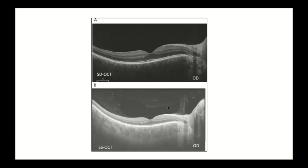Not only can swept source OCT capture the image in front of the retina, but it also provides information behind the RPE cells — you can see a faint line representing the choroid. In Malaysia, Japan, and parts of Southeast Asia, polypoidal choroidal vasculopathy (PCV) is a prevalent disease, and a lot of research has gone into studying the choroid. This thickened choroid, called pachychoroid, can be associated with conditions such as PCV.